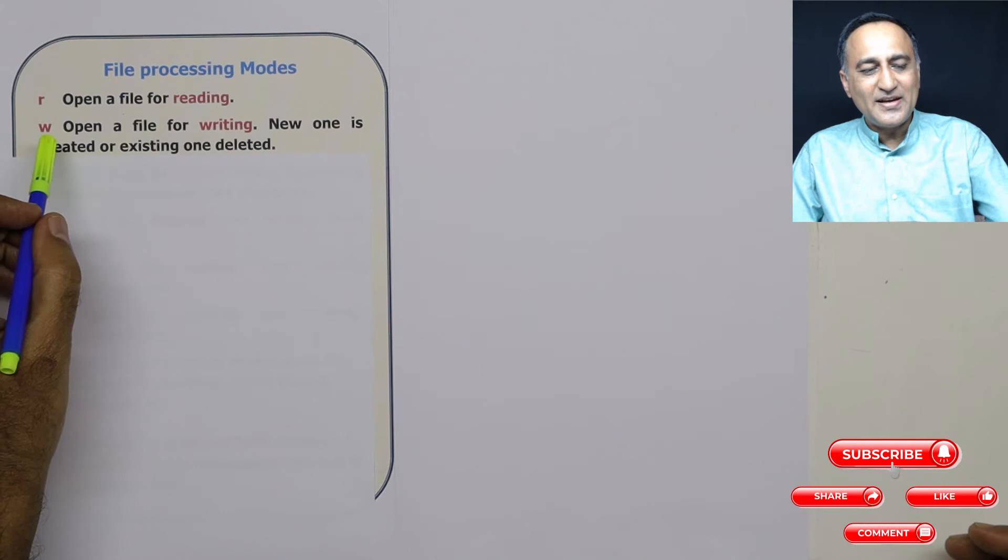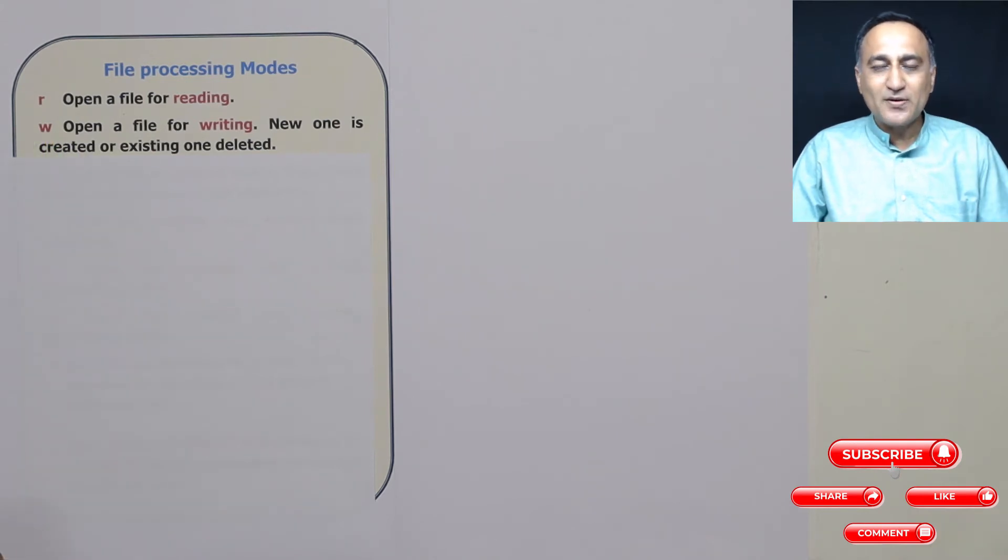So when you open a file in W mode or write mode as they call it, the file is opened for writing. But you need to understand two things here. If the file already exists on your hard disk, that file will be deleted and a new one will be created. That is really important. And if the file doesn't exist, of course, it will be a new file.